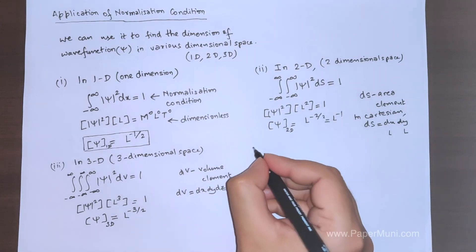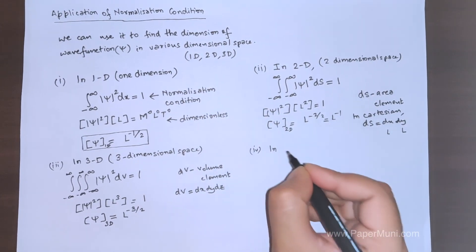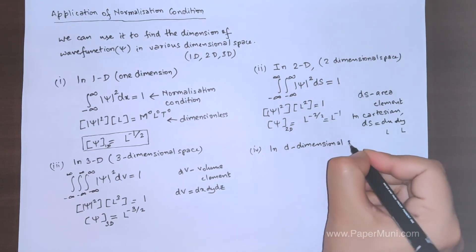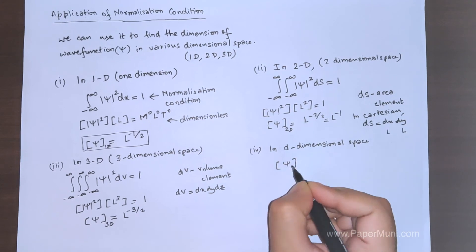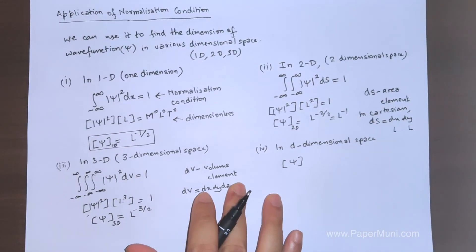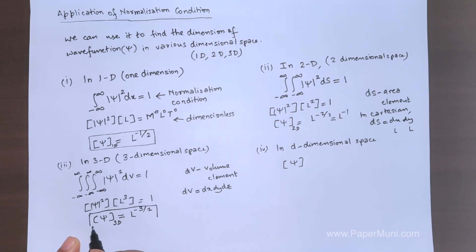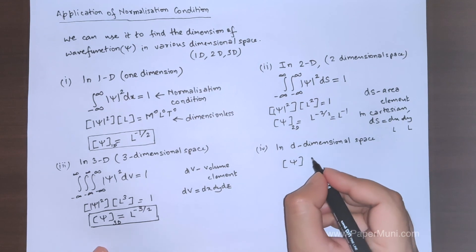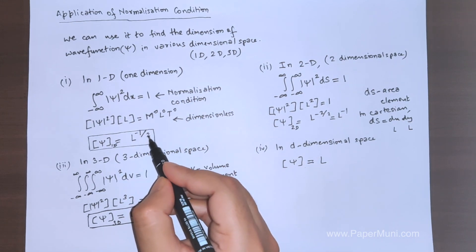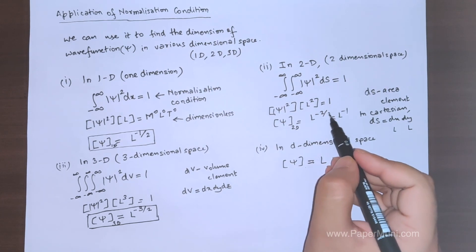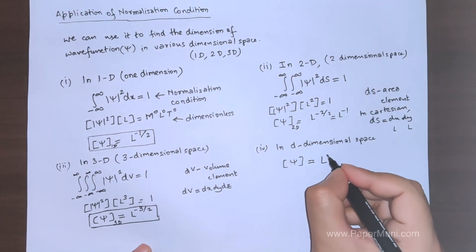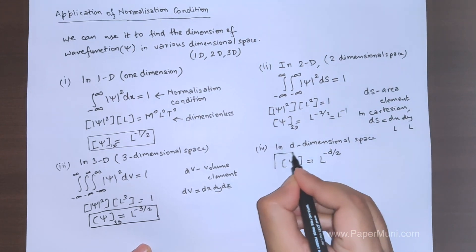We can generalize this result for a d-dimensional space — whether 4D, 5D, or any higher dimension. Observing the pattern: for 1D the exponent is -1/2, for 2D it is -2/2, and for 3D it is -3/2. In general, the dimension of the wave function in d-dimensional space is L^(-d/2).